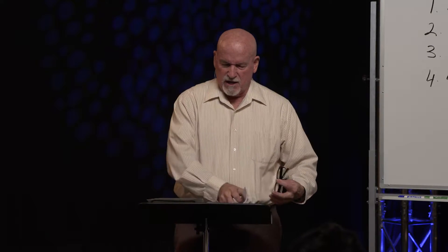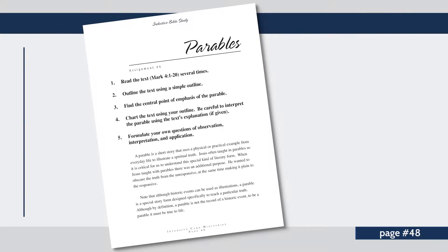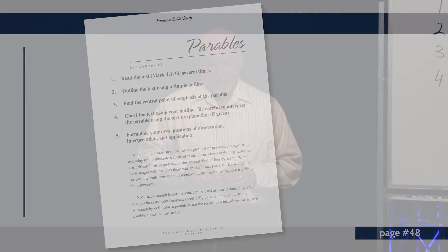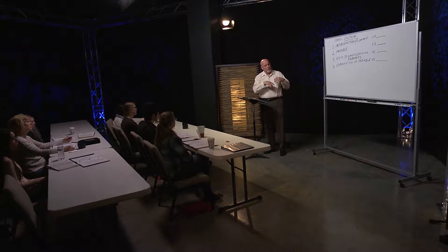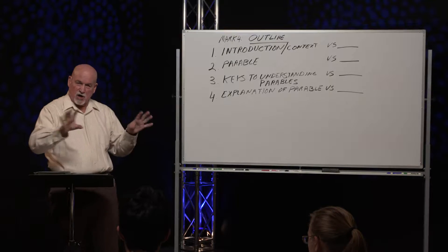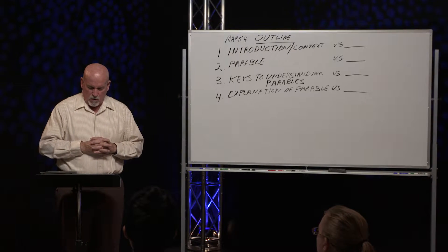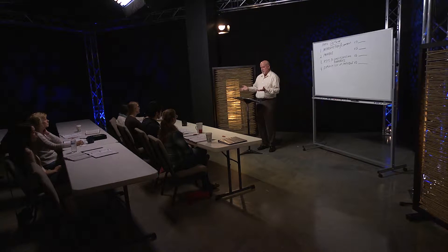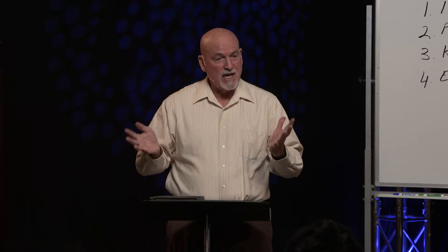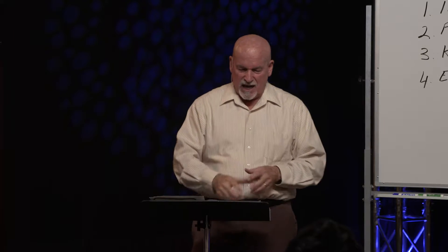Now I want you to turn over to the sixth assignment. We're going to look at one of the classic parables in our New Testament — the parable of the sower — in Mark chapter 4, verses 1 through 20. Read that passage several times, then we're going to do an outline form. We're going to look for the central point of emphasis, because every parable has a point of emphasis. Then we're going to do a charting, and you're going to formulate your own questions for a small group Bible study.